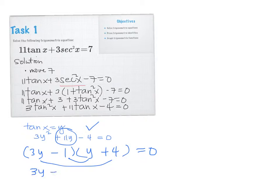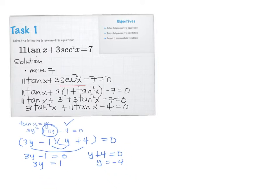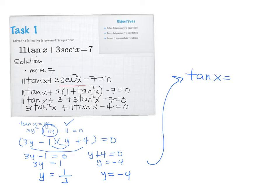So the factored form gives us (3Y minus 1) equals 0 and (Y plus 4) equals 0. Moving the numbers to the right: Y equals 1/3 and Y equals negative 4.